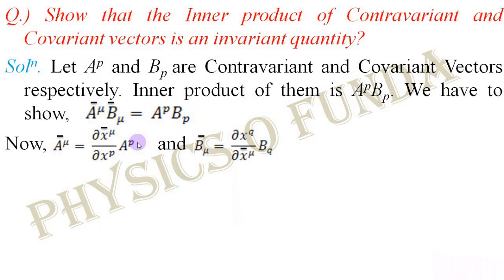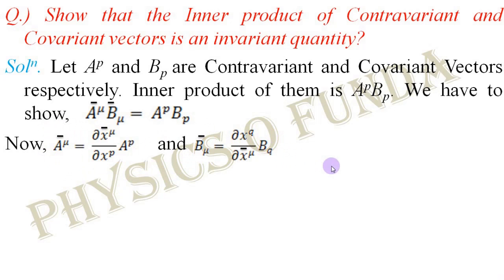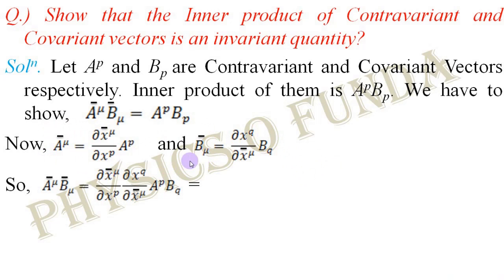Let's start with the transformation equation for a contravariant vector: Ā^μ = (∂x̄^μ / ∂x^p) A^p. Similarly, the transformation equation for a covariant vector is B̄_μ = (∂x^q / ∂x̄^μ) B_q. If we multiply these two equations, the multiplication of the left-hand side gives Ā^μ B̄_μ, and the right-hand side gives (∂x̄^μ / ∂x^p)(∂x^q / ∂x̄^μ) A^p B_q.